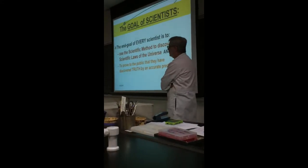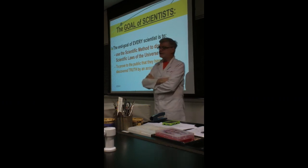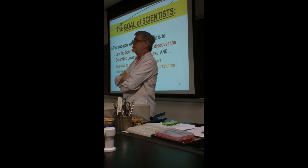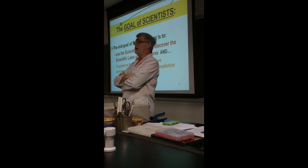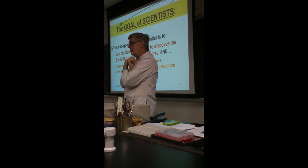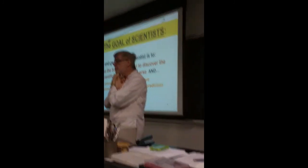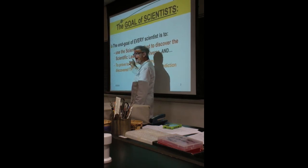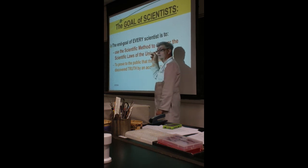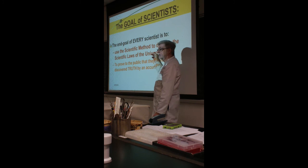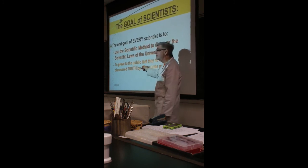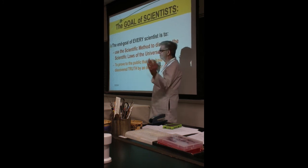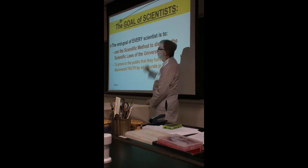I'm going to tell you a very good essay for this portion. First of all, it says: what's the goal of a scientist? The goal of a scientist is to use a procedure that all people in science have agreed upon — that is comparative, objective, measurable, able to assign a number that everyone understands, that is reliable and repeatable — to discover the procedures and methodology of how the universe works, has worked, and always will function, which is called a scientific law.